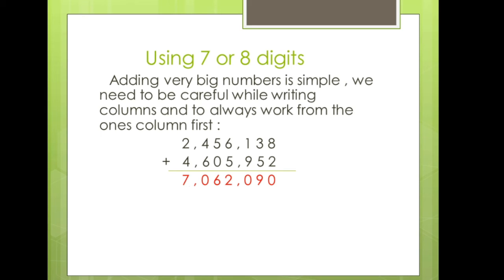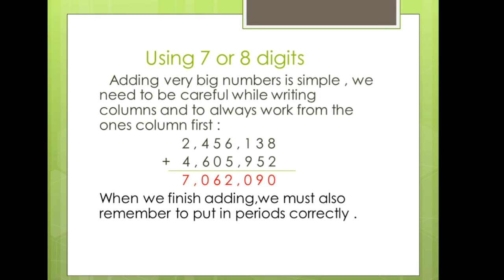One plus two is three and three plus four is seven. That is how you have to add them — the basic logic is the same as with two digit or three digit numbers. Always keep in mind that when we finish adding, we must also remember to put in periods correctly. Whenever you are through with the answer, the periods should be in proper columns and the numbers should be in proper periods.